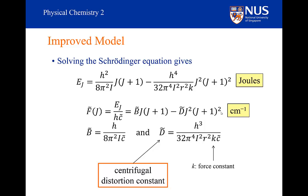Notice that my centrifugal distortion D depends on K. I apologize for the confusion that arises here because this K is not the Boltzmann constant, but instead is the force constant. We use the same symbol sadly. So this is the force constant, that is how stiff the bond is.